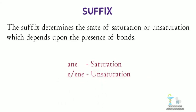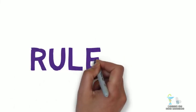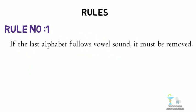There are some rules to be followed while naming the heterocycles. Rule number 1: If the last alphabet follows a vowel sound, it must be removed.